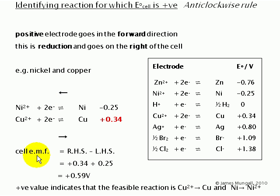To work out this E-cell EMF, we can just say it's right-hand side minus left-hand side. The copper is the more positive. It went in the forward direction, it was a reduction, and it was on the right of the cell. So it's the right-hand side. We take the +0.34 then minus the nickel, that's a double minus, makes +0.25, gives +0.59. Overall, this positive value indicates that the feasible reaction is the copper 2+ becoming copper and then the nickel going in the reverse direction, nickel becoming nickel 2+.